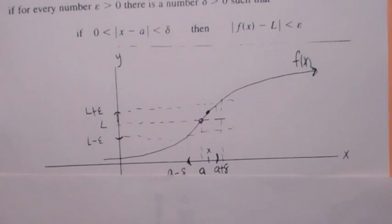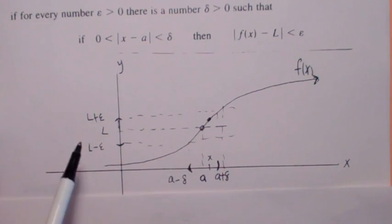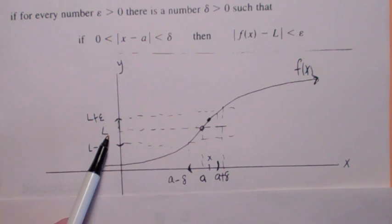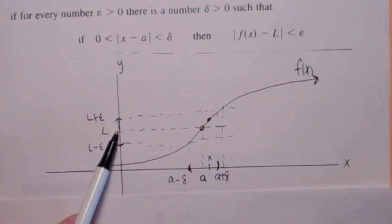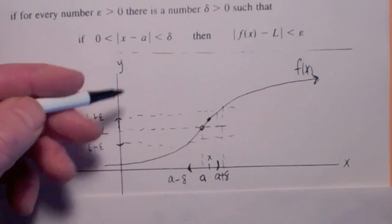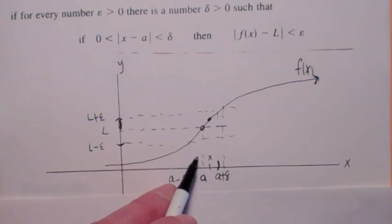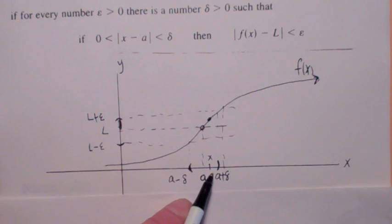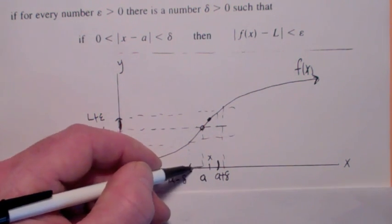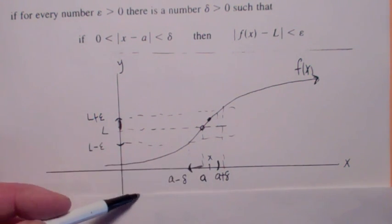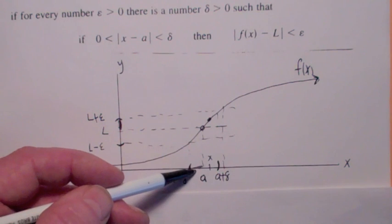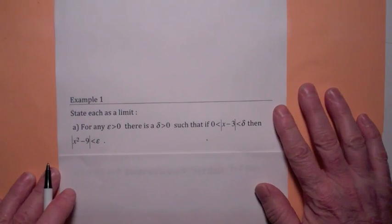Also, I think it's important to understand the epsilon happens first. By first picking an epsilon, the size of epsilon, which is the radius of this width along the y-axis, that will probably determine the size of delta, which is the radius of the interval along the x-axis. The smaller the epsilon, the smaller the delta, usually.